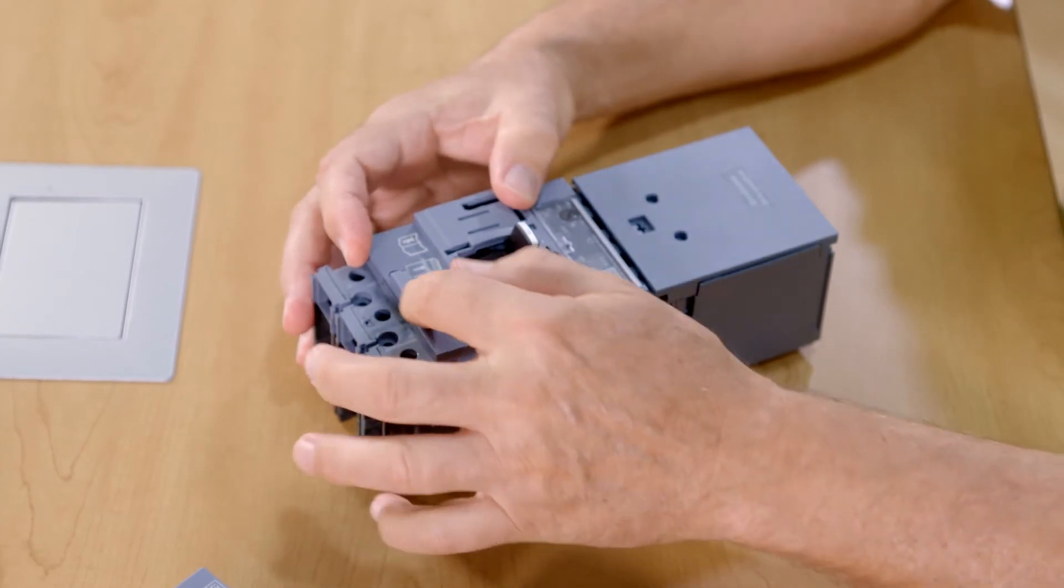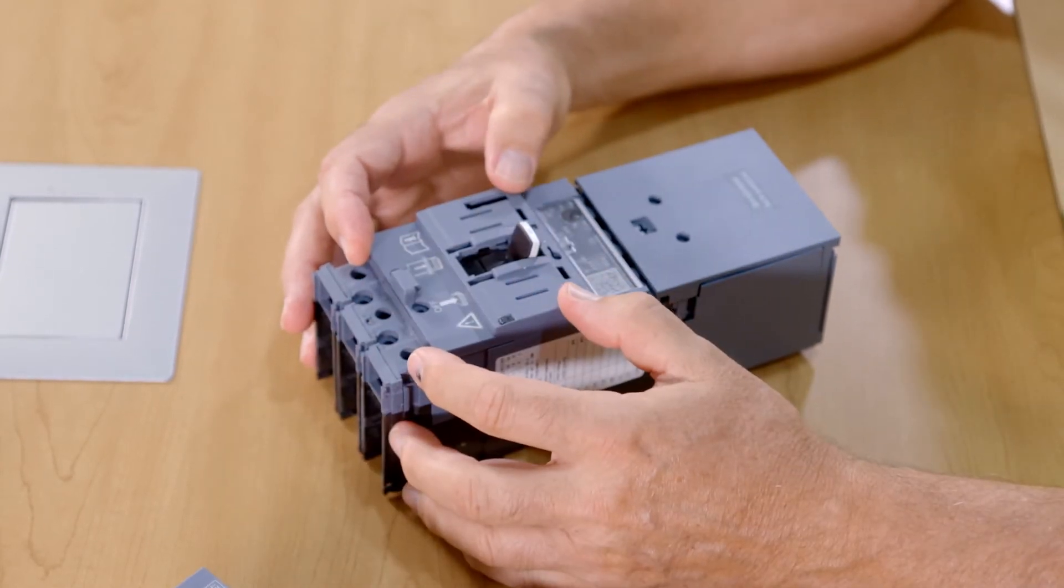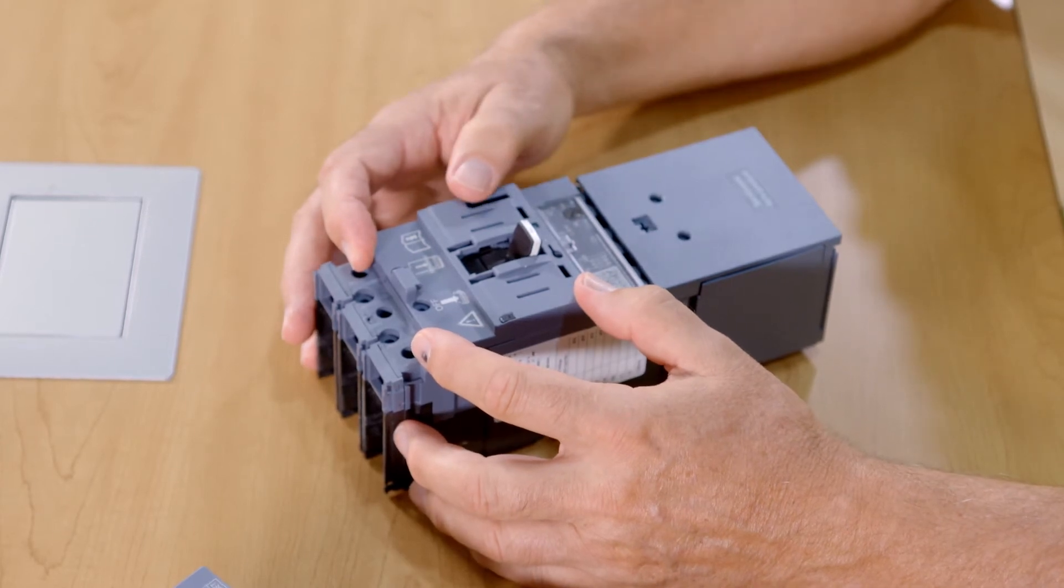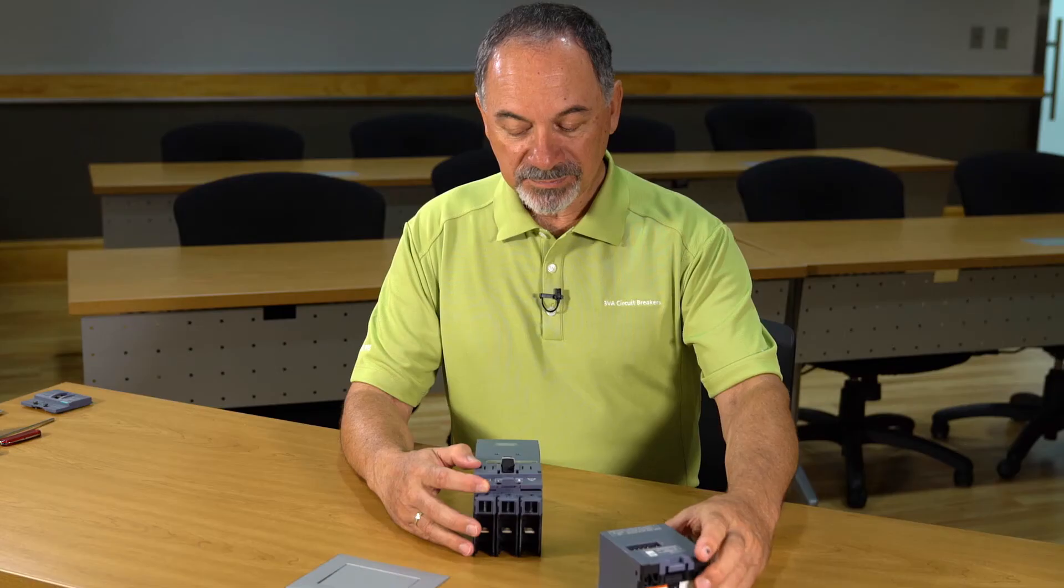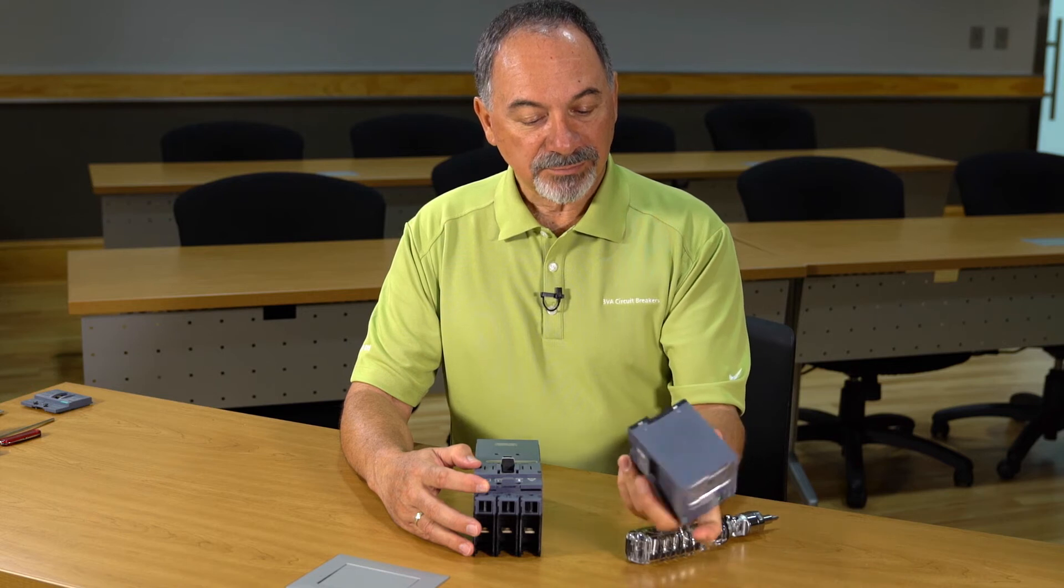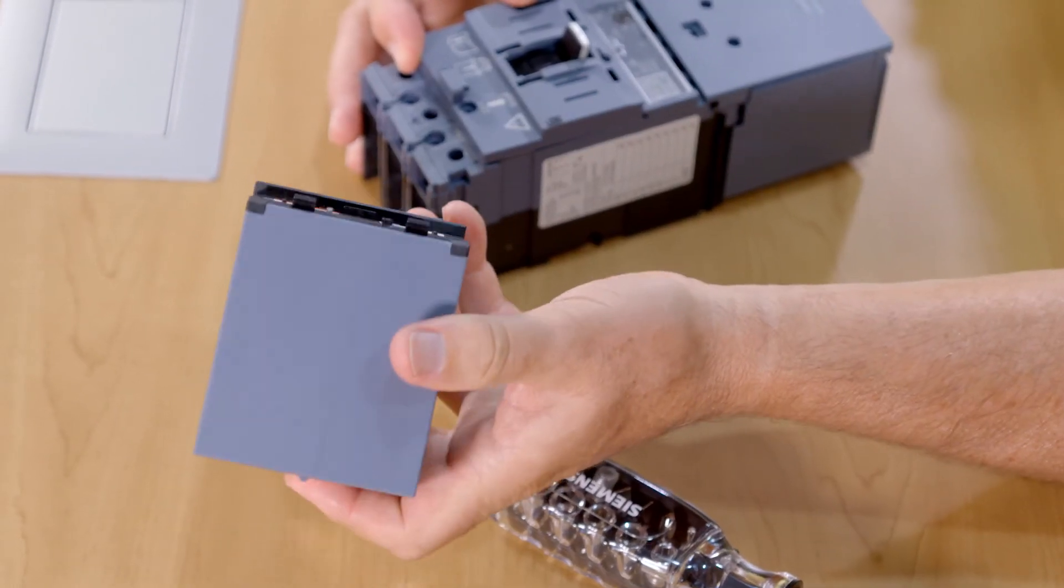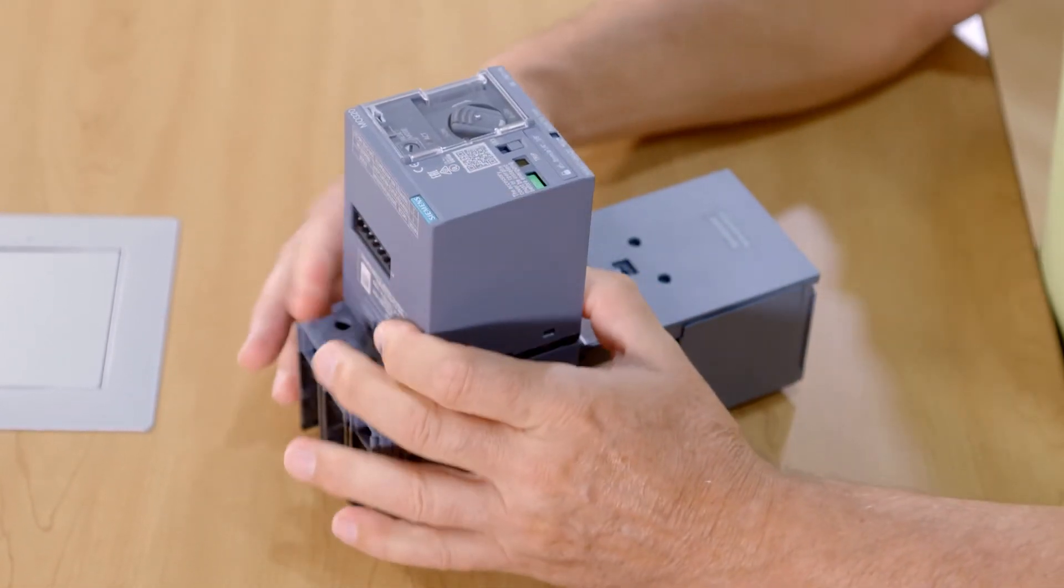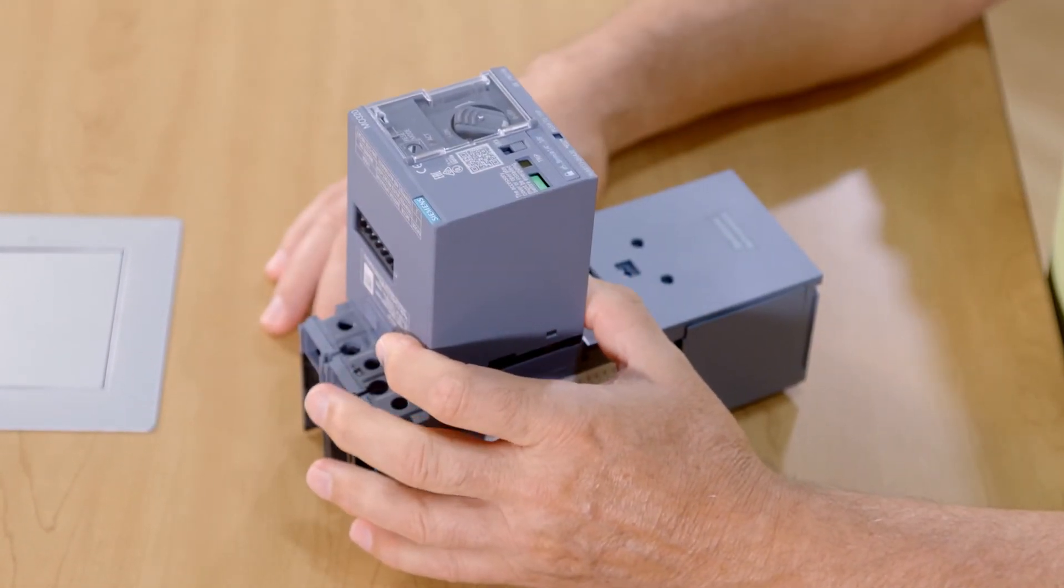Normally, I would use two screws to mount this base to the breaker, but for illustration purposes today, I'm just going to hold it in place. Now, we take the motor operator, there are two hooks on the backside of the motor operator, go into the slots, and it snaps in place. So, your motor operator is mounted.